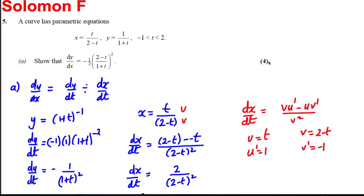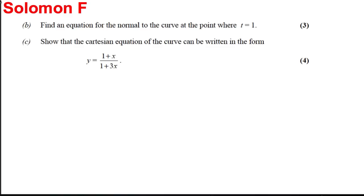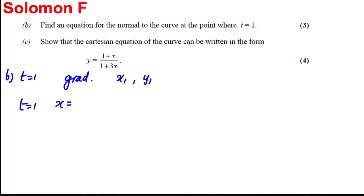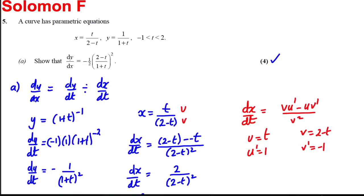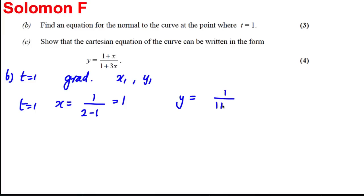So those four marks in the bag. Part B: we're asked to find an equation of the normal to the curve where t is 1. To find the normal of the curve, we're going to need the gradient, and we're going to need an x₁ and a y₁ value. So firstly, let's get the x and y value. When t is 1, x is going to be equal to t over 2 subtract t, so it's 1 over 2 subtract 1, which is equal to 1. And y is going to be equal to 1 over 1 plus t, so 1 over 1 plus 1, which is a half. So our coordinates when t is 1 are 1 and a half.